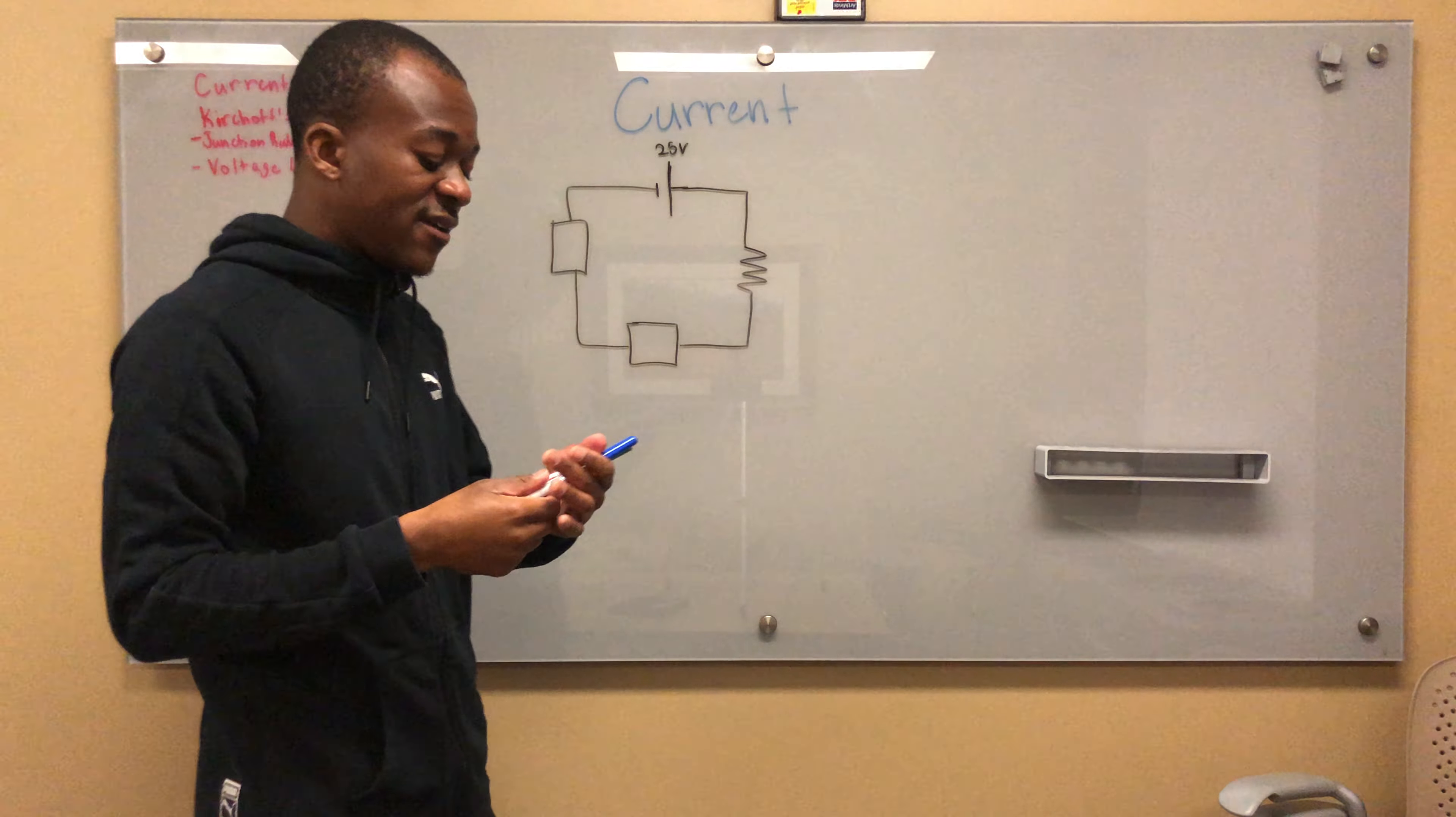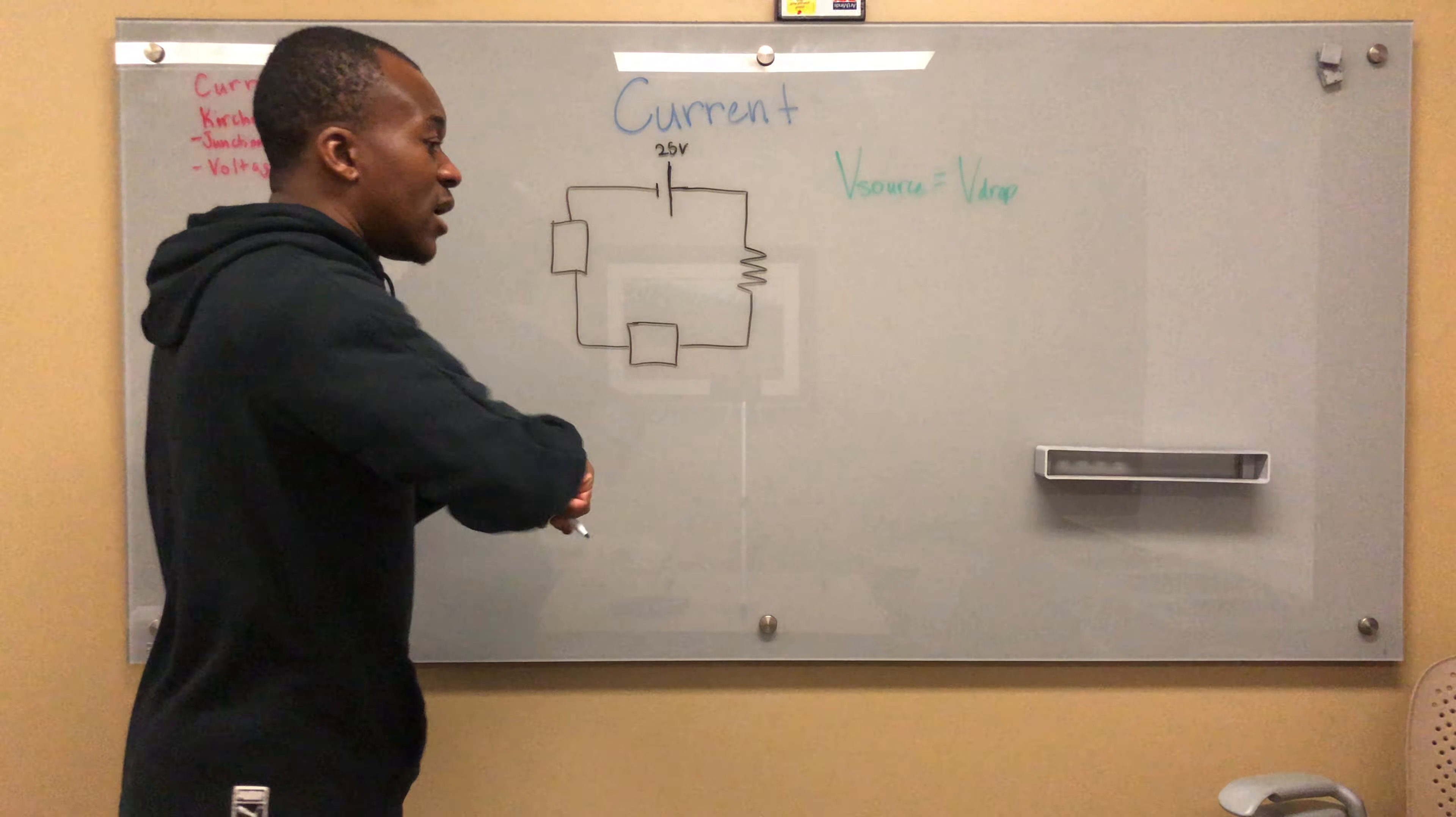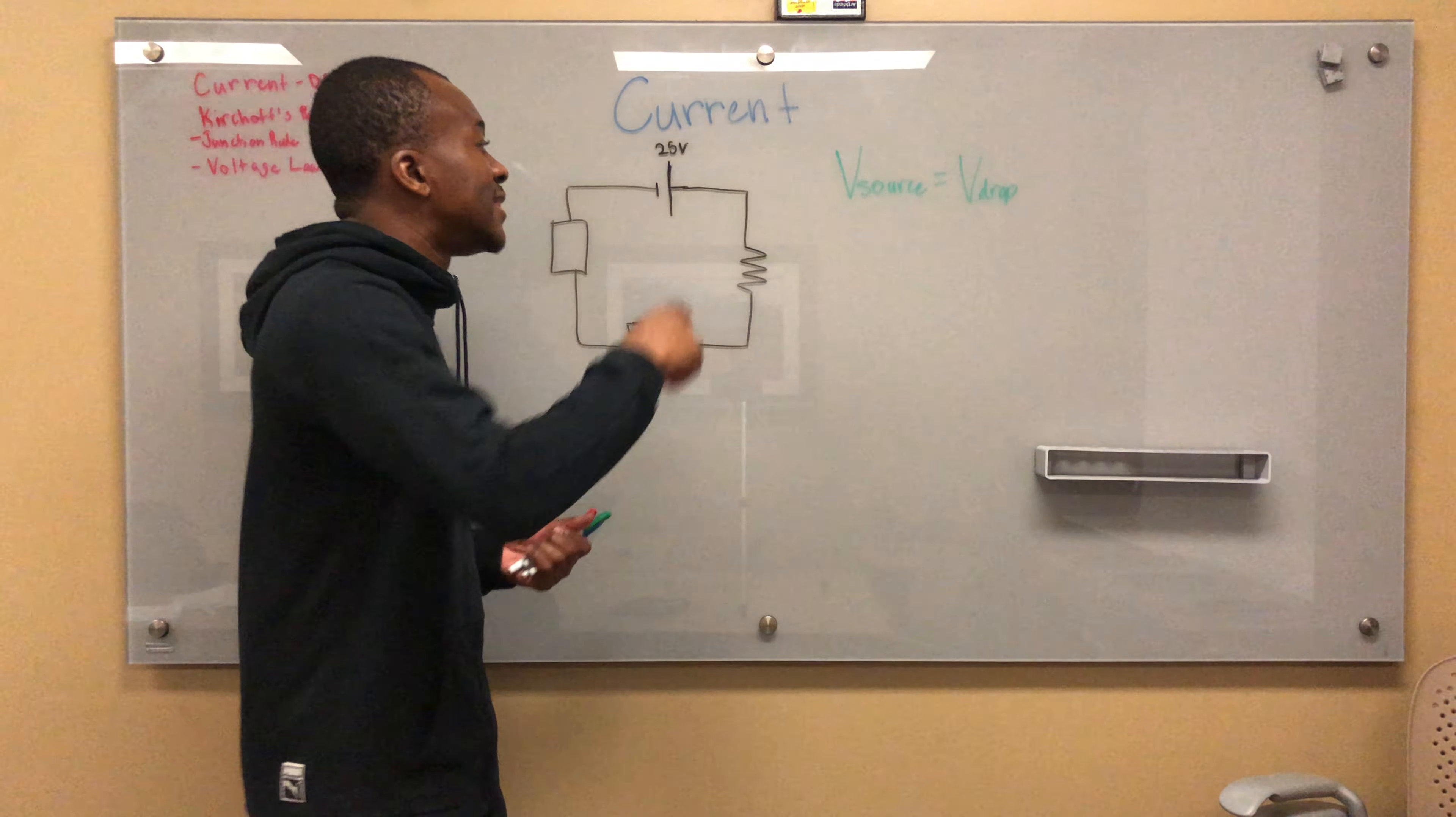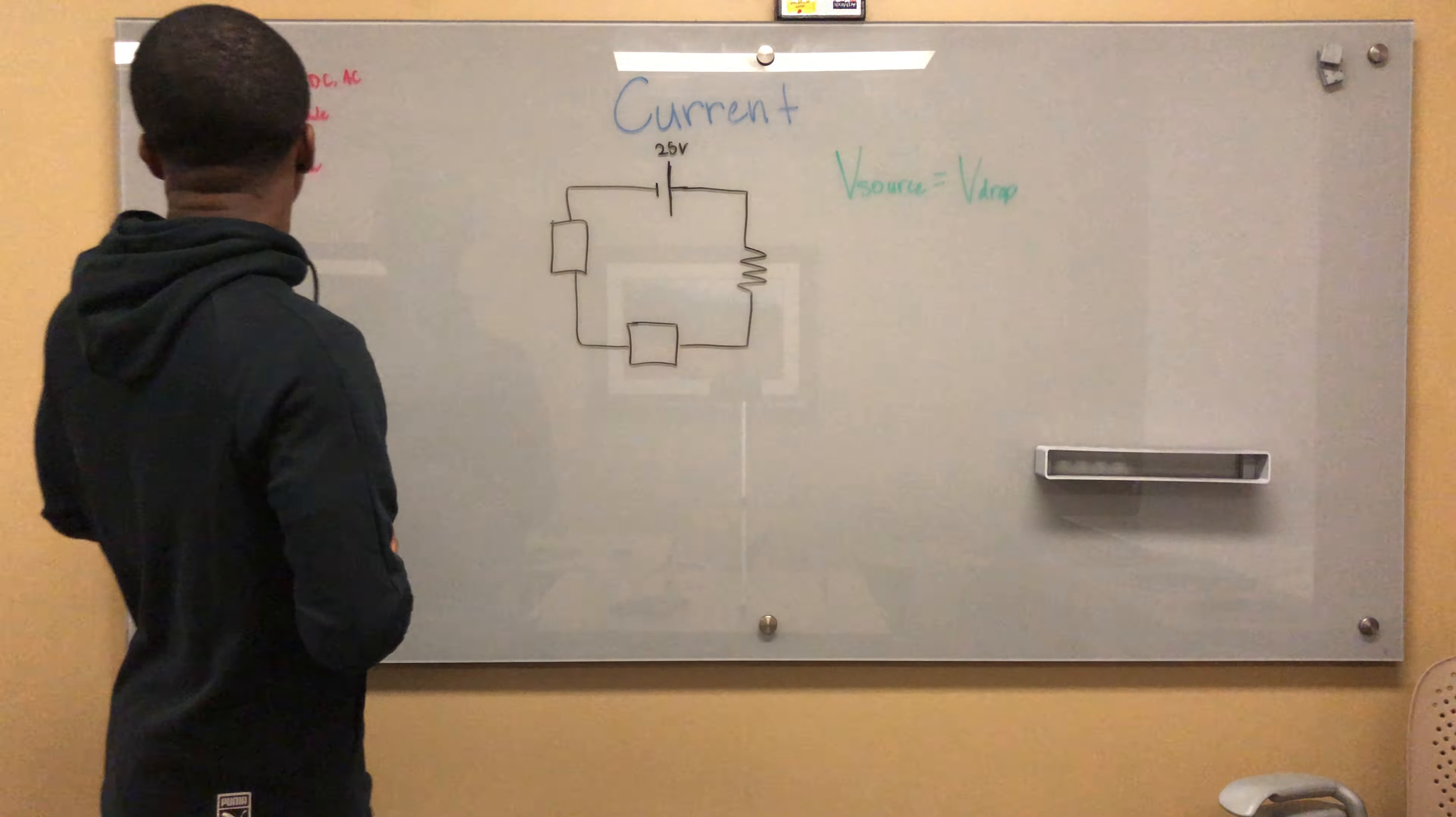So basically, Kirchhoff's loop rule says that the voltage of the source of a loop has to be equal to the voltage drop. Each of these cause a voltage drop because there's a difference from here to here. We maybe start out with 25 volts - that's the difference here. I look at it as, it's not like this has 25 volts, it's the difference between here and here is 25 volts. So from here to here is some set value, from here to here some set value, and from here to here is another set value. That's a way you can look at it. Yeah, that's all we have right now.